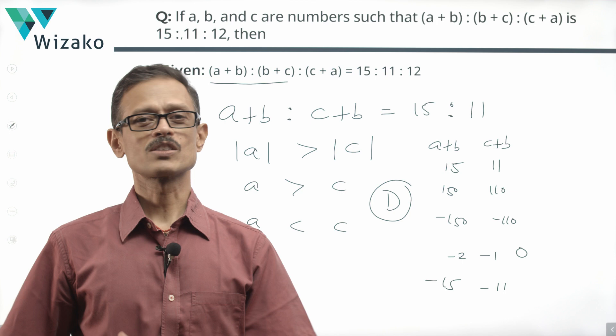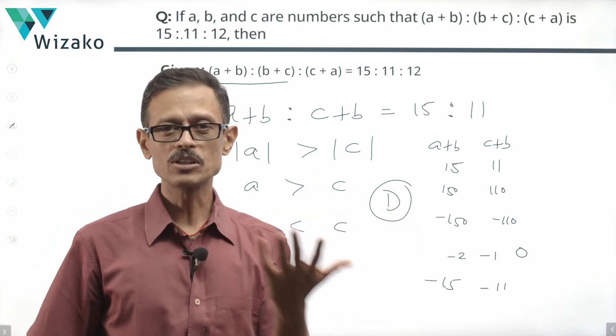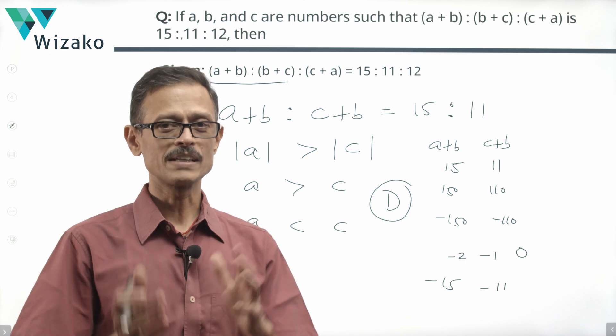It did not mention whether the numbers are positive or negative. Therefore, we will not be able to deduce. The correct answer therefore is choice D, cannot be determined.